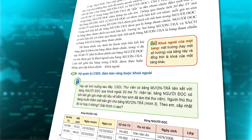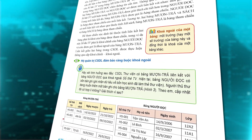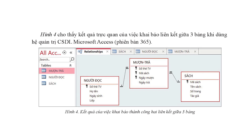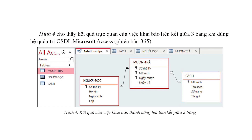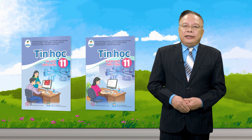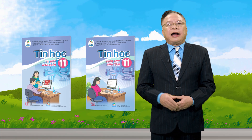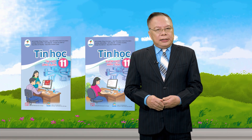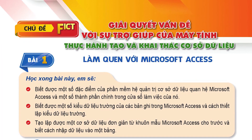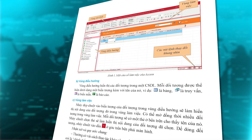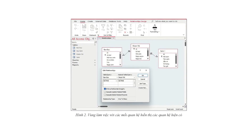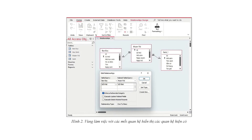Về các khái niệm như bảng thể hiện một quan hệ, khóa chính và ràng buộc khóa, vấn đề dư thừa dữ liệu dẫn đến khóa ngoài và liên kết giữa hai bảng. Chủ đề FICT thực hiện tạo và khai thác cơ sở dữ liệu là một chuỗi bài thực hành có tính kế thừa xuyên suốt, tạo ra sản phẩm cuối cùng là một ứng dụng cơ sở dữ liệu Access quản lý thư viện đơn giản có thể sử dụng được.